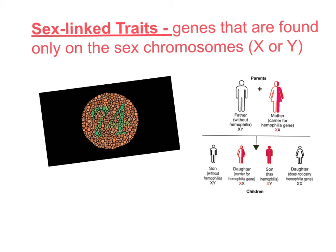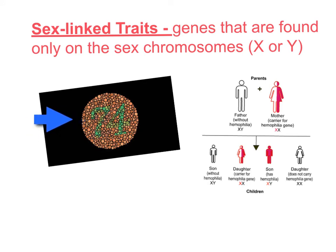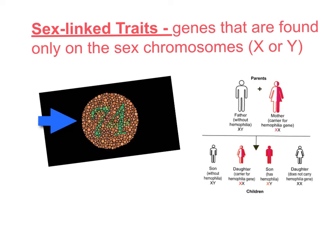Last but not least, our last pattern of inheritance is called sex-linked traits. Sex-linked traits are interesting because these are genes specifically found only on the sex chromosomes — either the X or the Y. Most commonly, when scientists talk about sex-linked traits, they're talking about genes that exist on the X chromosome. If you can see a circle of red pixelations with a number inside in the picture on the left, that means you have great vision. However, if you can't see the seven and four outlined in green, that might mean you have color blindness. Color blindness is a sex-linked trait located on the X chromosome and is more commonly found in males.